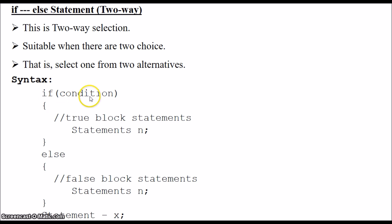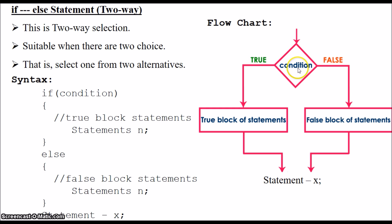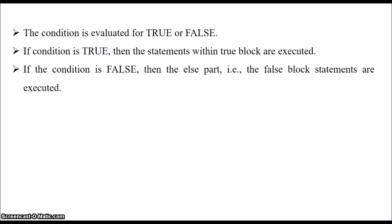Let's check the flowchart. The condition is evaluated for true or false. If the condition result is true, the true block statements are executed and the program execution continues from statement x. If the condition is false, the flow goes to the false block statements, where all statements within the false block are executed, and again the program execution continues from statement x.